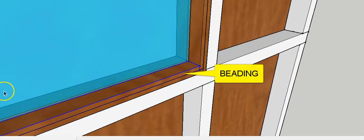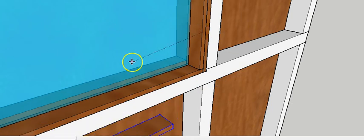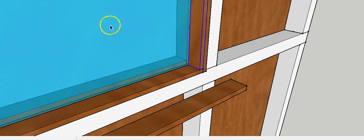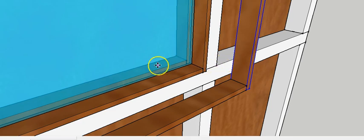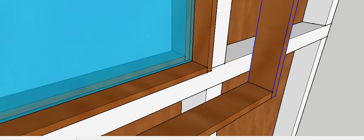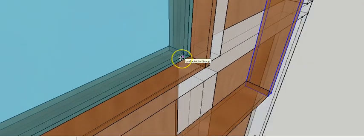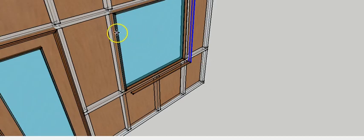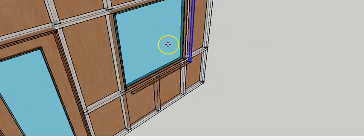On top of that, the beading members are fitted. There is a horizontal beading member and a vertical beading member — these are the timber beadings that get fitted and hold the glass. Looking at the x-ray view, we can see the glass on the inside with the beading on the sides. The beading is required so that if you want to replace the glass at any time, you can remove the beads and replace it.